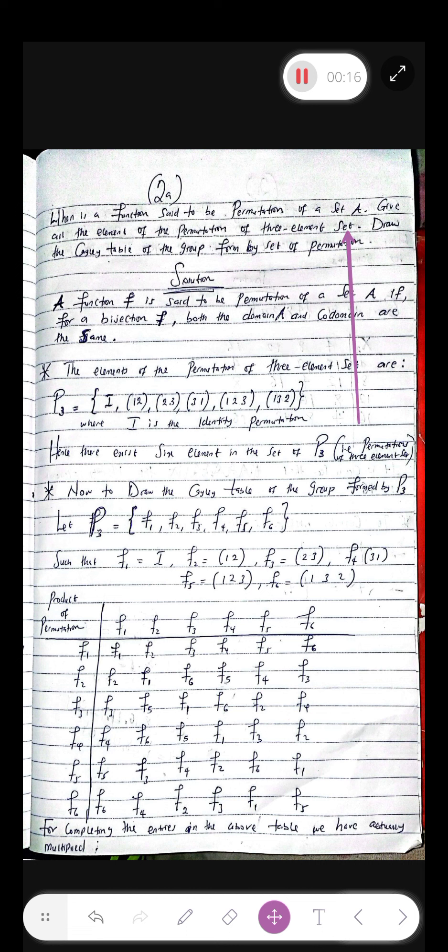I believe I've explained that if I want to find all the elements of permutation of three elements. Let me give you a pattern to this. The best way to get this is if I take a pen now and I'm looking for all the elements of permutation of three element sets.